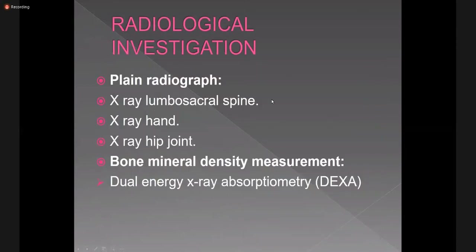The radiological investigations done to diagnose osteoporosis on plain X-rays include X-ray lumbosacral spine, X-ray hand, X-ray hip joint, and bone mineral density measurement. Bone mineral density is the amount of calcium hydroxyapatite crystals in the bone, and it is done by dual energy X-ray absorptiometry, called DEXA.